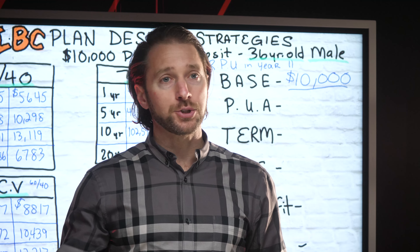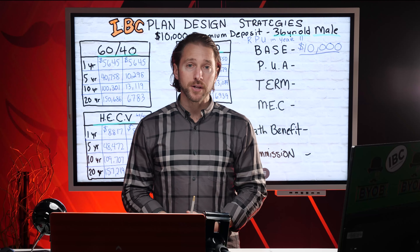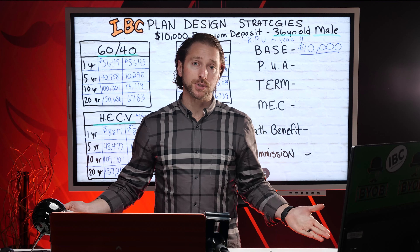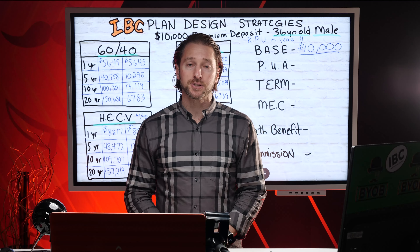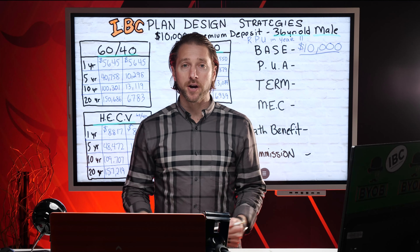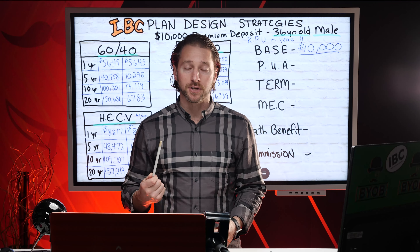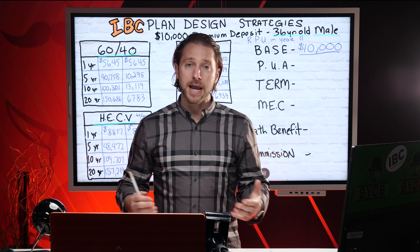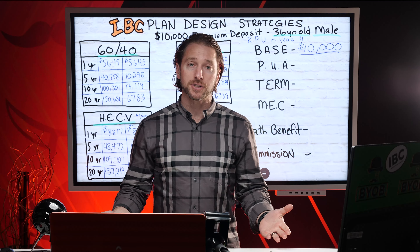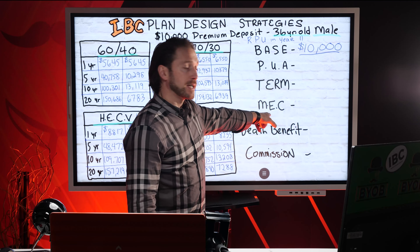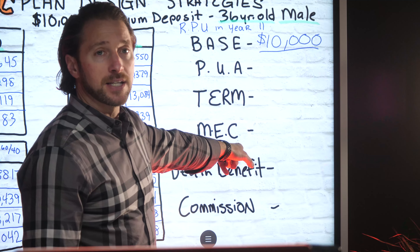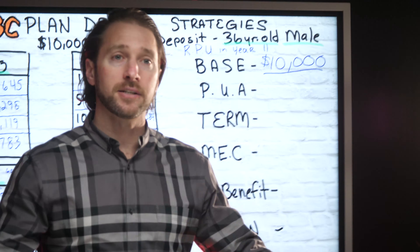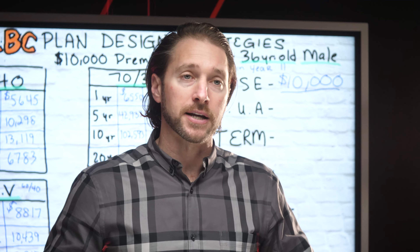The death benefit is there really as a secondary — as a bonus, as I like to say. It's just there to satisfy the requirements of calling this a life insurance contract, and to satisfy the MEC guidelines, which are IRS guidelines.